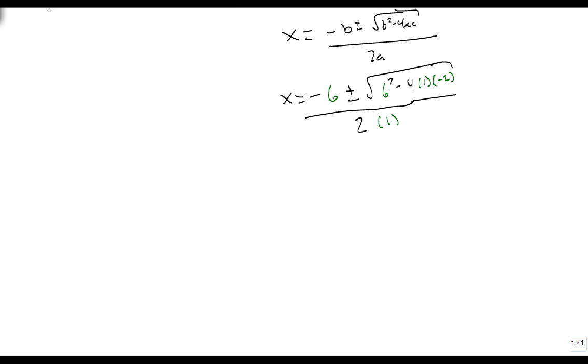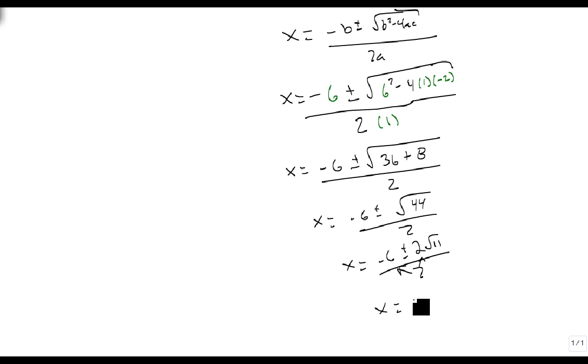So that's x equals minus 6 plus or minus the square root of 36 plus 8, all over 2, which is 44 over 2. We can bring a 2 out, square root of 11 over 2, and the 2 goes into both the 6 and the 2. So x is minus 3 plus or minus, the 2 goes away, just the square root of 11.